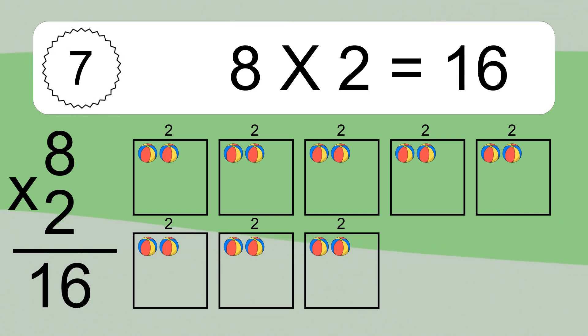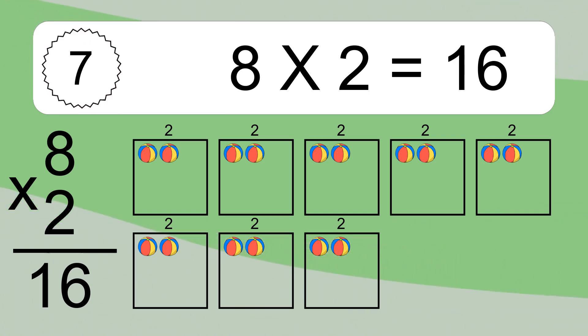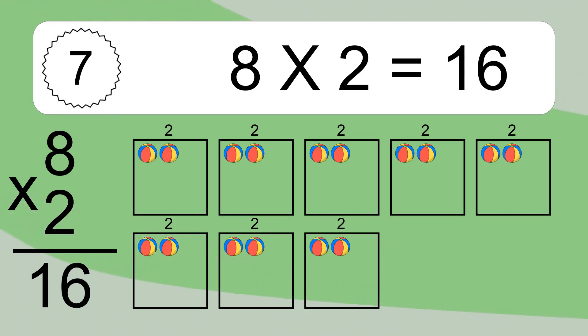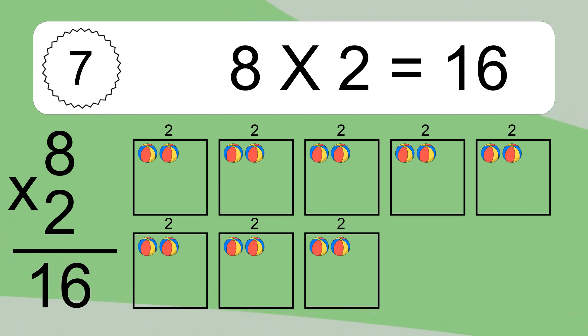We have 8 boxes, and each box has 2 colorful balls inside. If you count all the balls in all the boxes together, you will have 8 times 2 balls. This equals 16 balls.